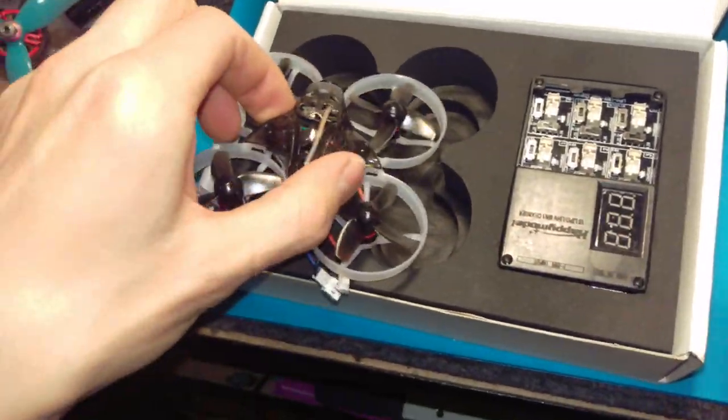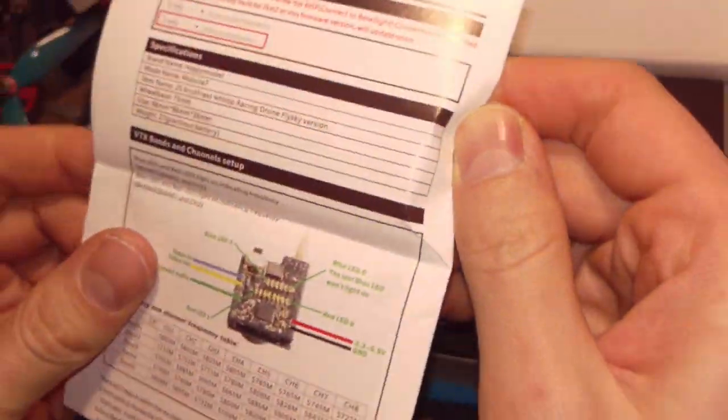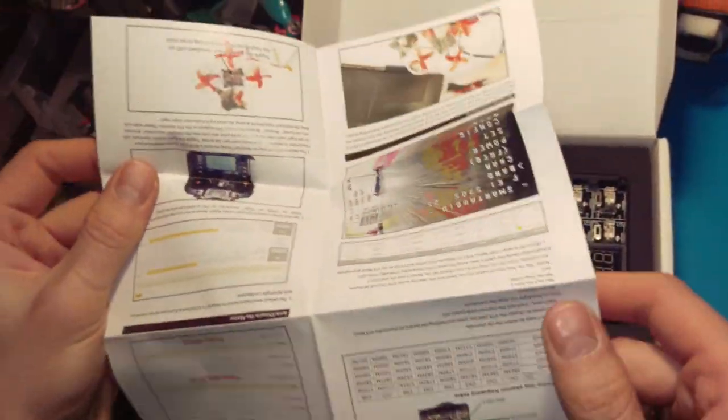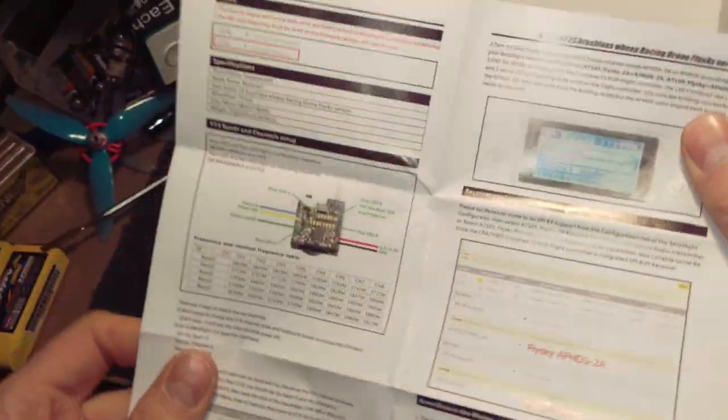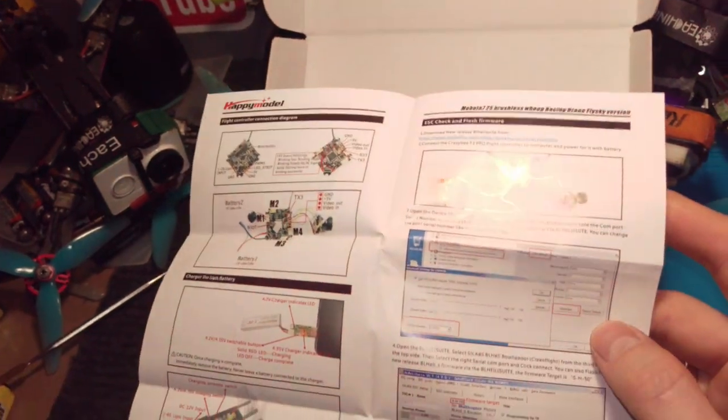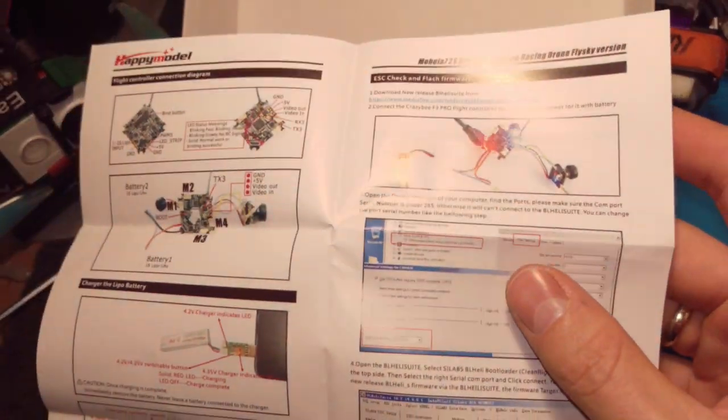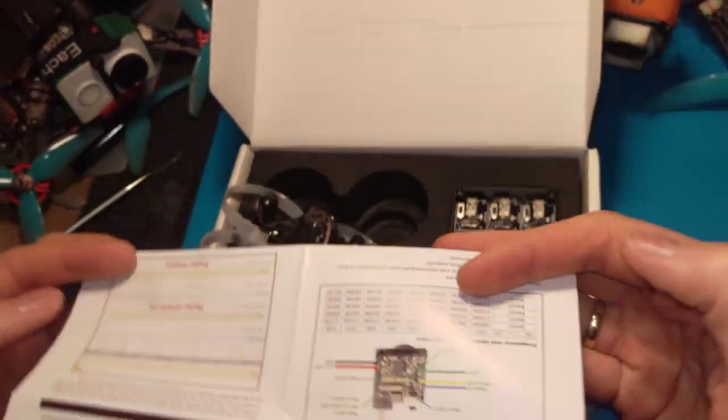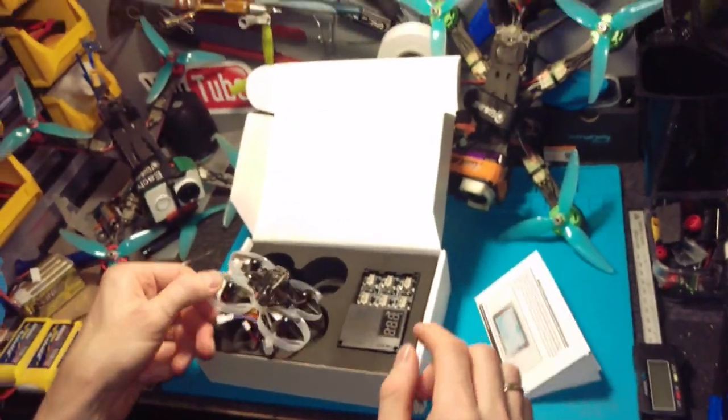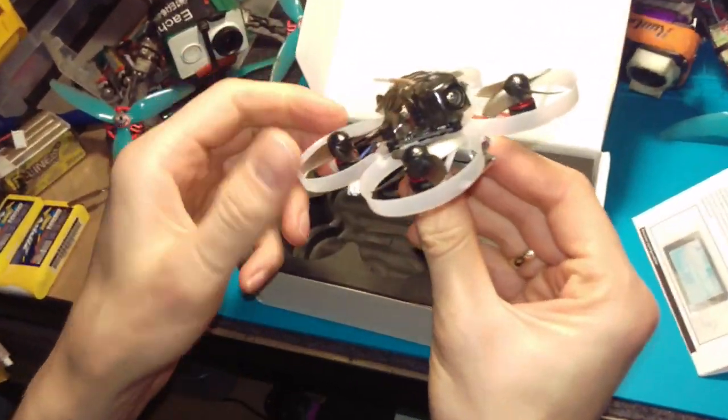We've got the instruction manual and a proper charger. The manual is in color, which is good - a nice manual with pictures. And here's the Mobula 7 itself.